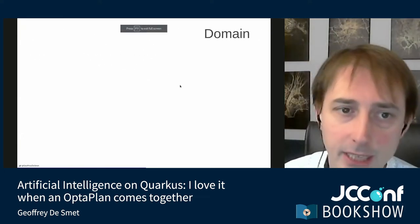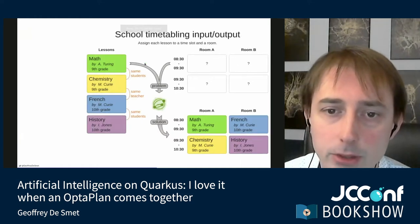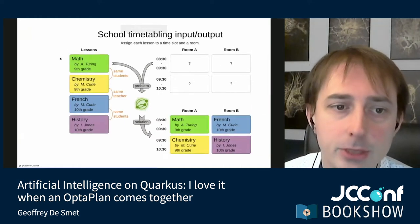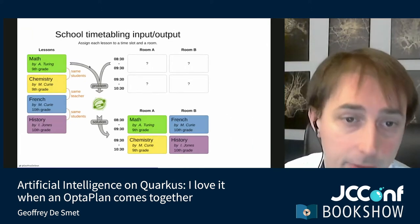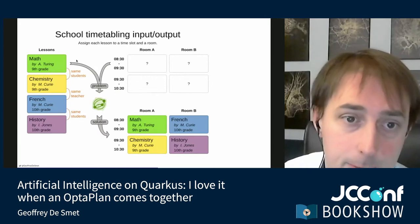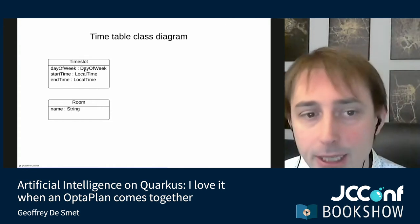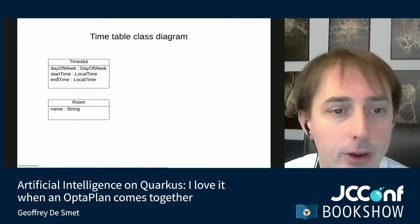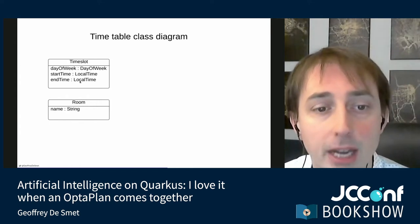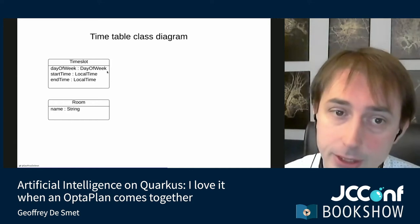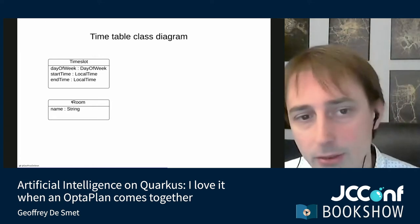How does the domain look? We're assigning lessons to rooms and time slots. The TimeSlot class has a day of week — Monday, Tuesday, Wednesday — and a start time and end time, like 8:30 to 9:30. There are multiple instances, like the 8:30 and 9:30 time slots on Monday and Tuesday. We have rooms — just room A, B, C, D — and then of course a number of lessons.